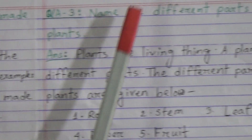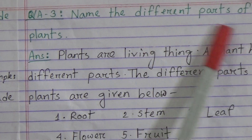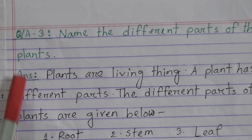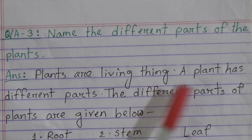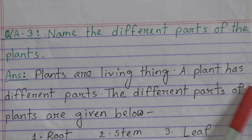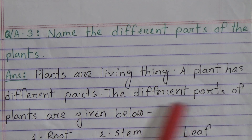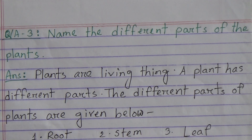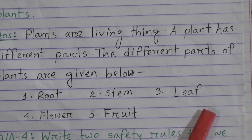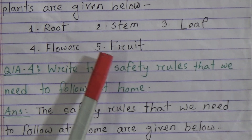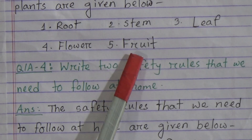My dear students, now come to question answer number 3: Name the different parts of the plants. Plants are living things. A plant has different parts. The different parts of plants are: number 1, root; number 2, stem; number 3, leaf; number 4, flower; and number 5, fruit.